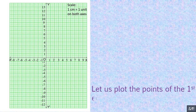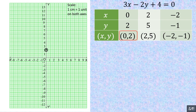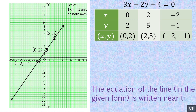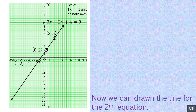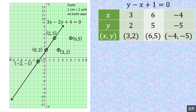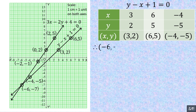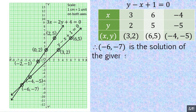Let us plot the points of the first equation from the obtained table. A line is drawn through these points, and the equation is written near the line. Now we draw the line for the second equation. The point of intersection is (negative 6, negative 7). Therefore, (negative 6, negative 7) is the solution of the given simultaneous equations.